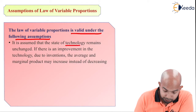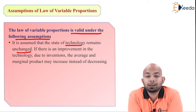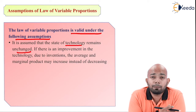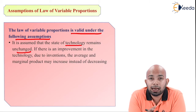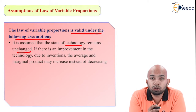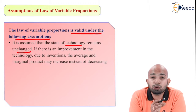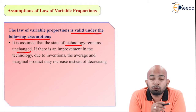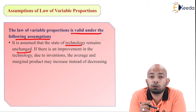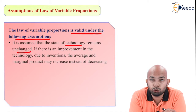The first assumption is that the state of technology remains unchanged. We assume that the technological state remains fixed. For example, if you never had a touchscreen phone and this law was derived back then, we would assume that this technology will never change. This means we assume there will be no technological advancement and no change in the state of technology.